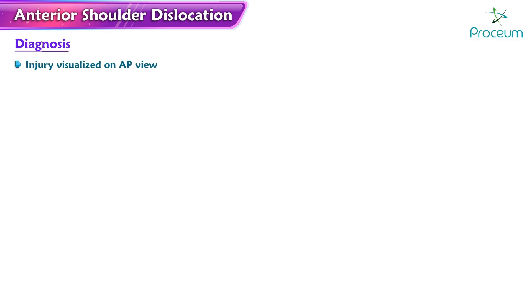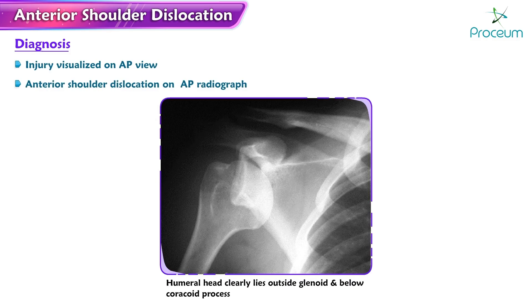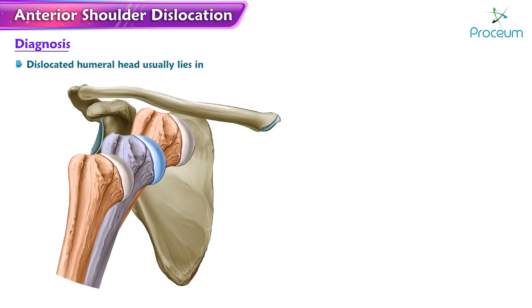The diagnosis of an anterior shoulder dislocation is often straightforward and easily visualized on the antero-posterior view. In an AP radiograph, the humeral head clearly lies outside the glenoid and below the coracoid process, usually in a subcoracoid position.